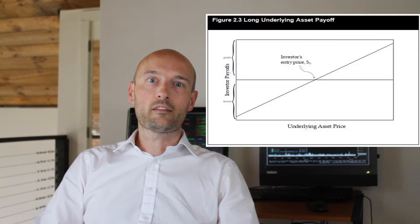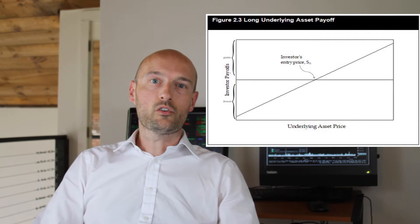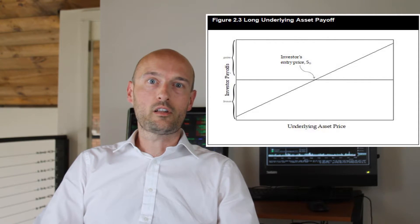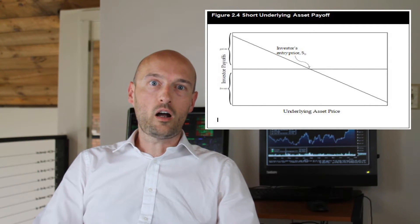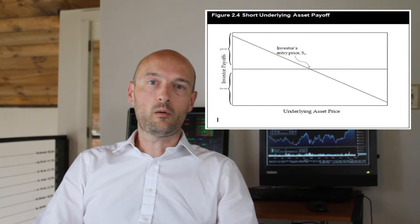In a long position, as the asset price moves up beyond your entry price, your profit increases. And as it falls below your entry price, your losses increase in a linear manner — there's nothing confusing about the manner in which your profits or losses increase or decrease. With a short position, as the price rises beyond your entry price, you lose money, and as the price falls, you actually make money. Once again, this happens in a linear fashion, so it's not very complicated.